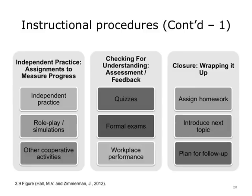Determine how you will have students practice the skill or information you just taught them. For example, if you have taught them about the HIPAA rules, have them practice with problem sets independently, role-playing groups, or other cooperative projects. How will you know whether your course is effective? Gather evidence of learning, usually by administering some kind of formal assessment and assigning grades. You will need to create a grading rubric based on lesson objectives. For workplace training, it may be necessary to design assessments that measure workplace performance after training. Use the last few minutes to assign homework or plan for the next session.